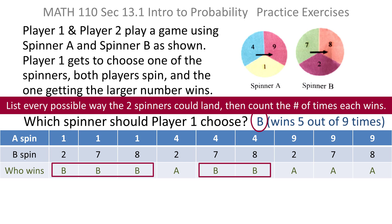Because spinner B wins 1, 2, 3, 4, 5 out of the 9 times.